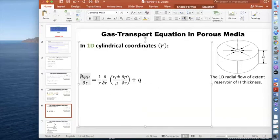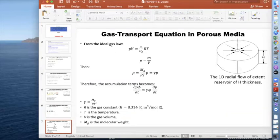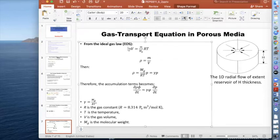Let's analyze the time derivative or accumulation term. We have density here. We can't solve this equation in its current form because we have two unknowns: one is p and the second is rho. We need another equation to couple or convert them to one variable.